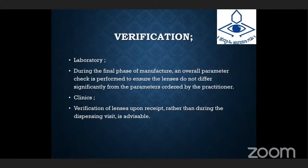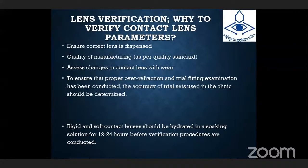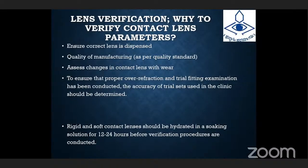Although the parameters verified are essentially the same for both laboratory and clinical settings, more parameters may be verified in the laboratory due to manufacturing quality control and differences in equipment accessibility. In clinics, verification of lenses upon receipt rather than during the dispensing visit is advisable. If a parameter issue is found at the dispensing visit, it creates problems for the practitioner and gives a negative impression to the patient. Therefore, we should verify lenses before the dispensing visit. The main reasons to verify contact lens parameters are: to ensure the correct lens is dispensed, to confirm manufacturing quality per standards, to assess changes in lenses with wear, to ensure proper refraction and clinical examination, and to determine the accuracy of the trial set used.